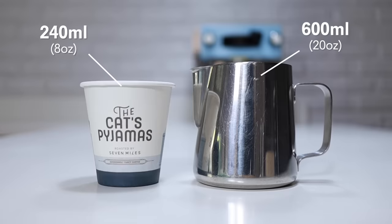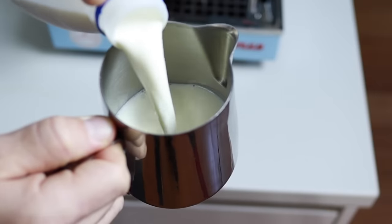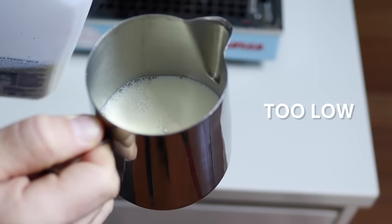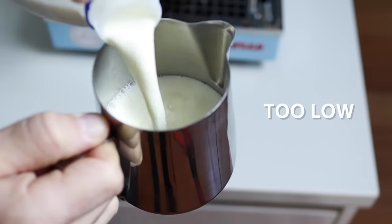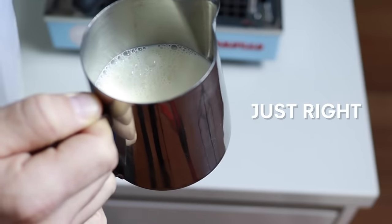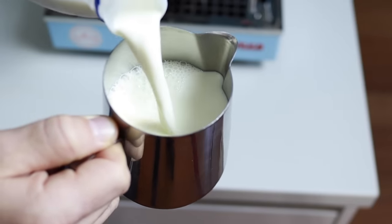While for an 8oz takeaway cup, a 600ml jug is going to be a better fit. Now the size is important because we need enough room for the milk to expand. On the other hand, if the milk is sitting too low in the jug, you won't be able to get a good whirlpool, which is essential to get a great texture.